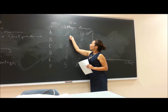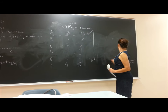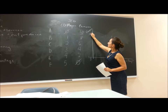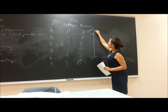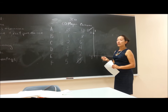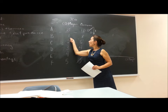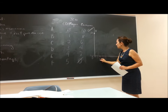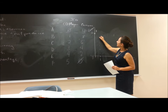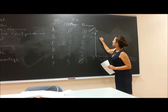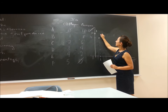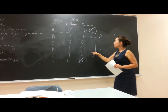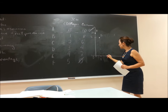One combination is zero CD players and ten cameras — that's point A. Another possible combination is one CD player and eight cameras — that's point B. A third combination is point C: two CD players and six cameras.